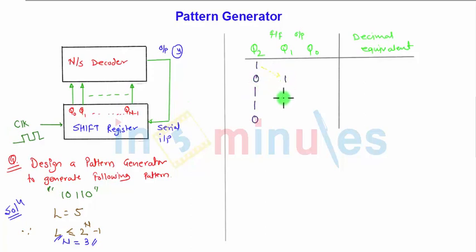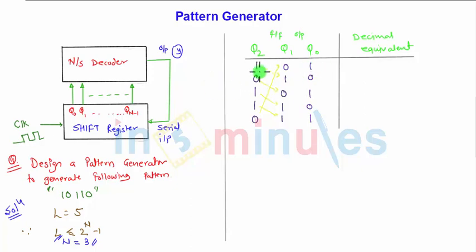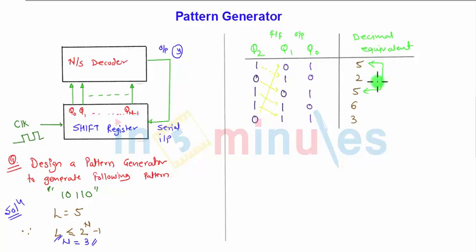Continuing the shift: we get states 1 0 1, then 0 1 1, then 0 0 1, and so on, following the same shifting procedure. The decimal equivalents of these states are 5, 2, 5, 6, and 3. However, the problem is that two of the same states appear — state number 5 is repeating in the very next clock cycle. This repeated state will not generate the correct pattern, as the basic requirement is that states should not repeat.